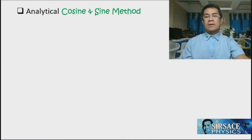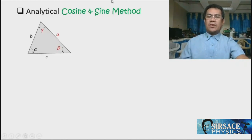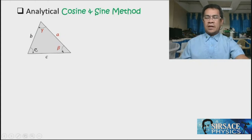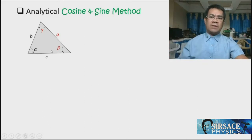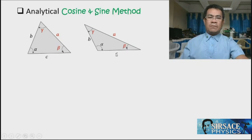From the cosine-sine law method, we use the law of cosines and the law of sines. Recall that an oblique triangle has no 90-degree angle. A triangle has three sides and three angles: angle alpha opposite side a, angle beta opposite side b, and angle gamma opposite side c. An oblique triangle can have three acute angles or one obtuse and two acute angles.